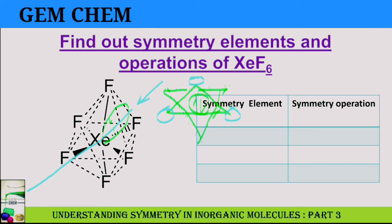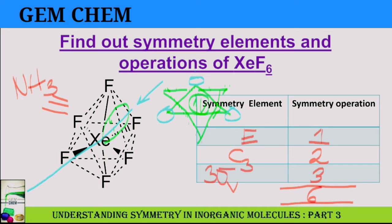So finally we can write down our symmetry elements as: first we have E that has one operation, then we have C3 that has two operations, and finally three sigma-V, that is three operations. So total there are six operations. This molecule becomes equivalent to ammonia as it is a distorted octahedral structure. The point group for this one is the same as that of ammonia, that is C3V.